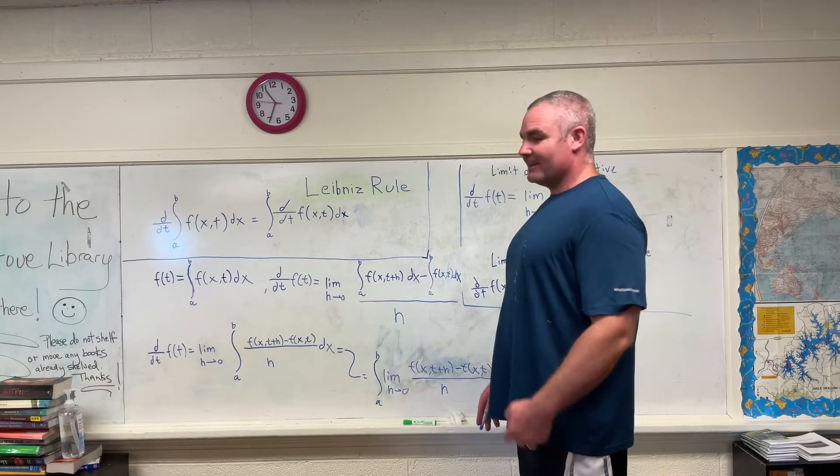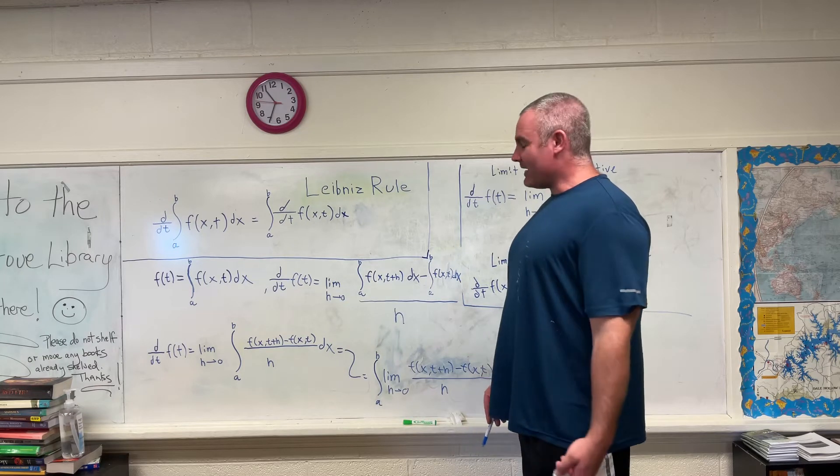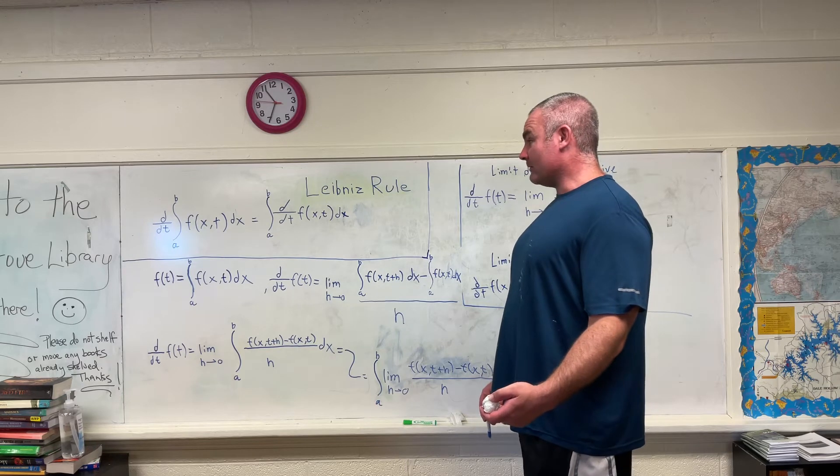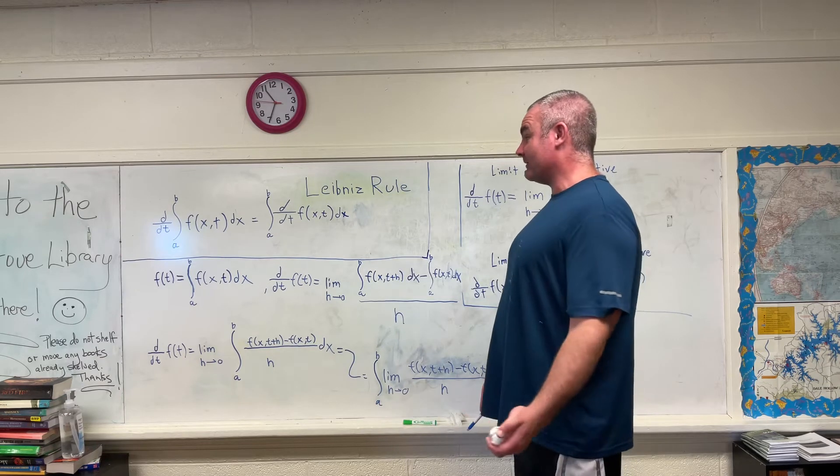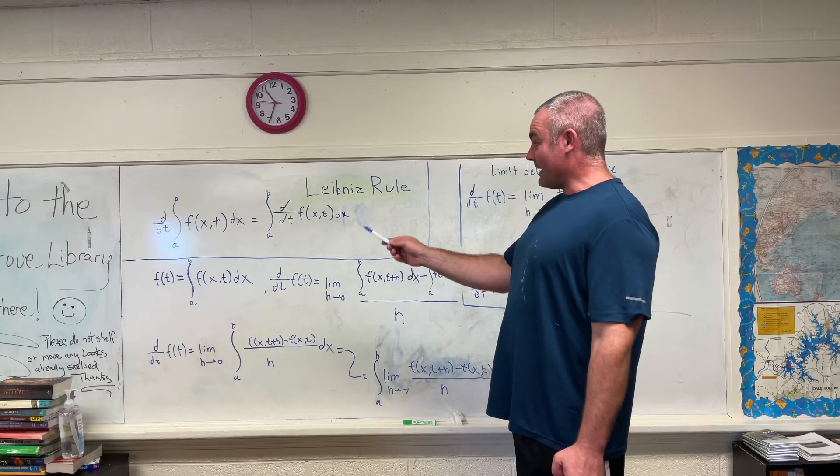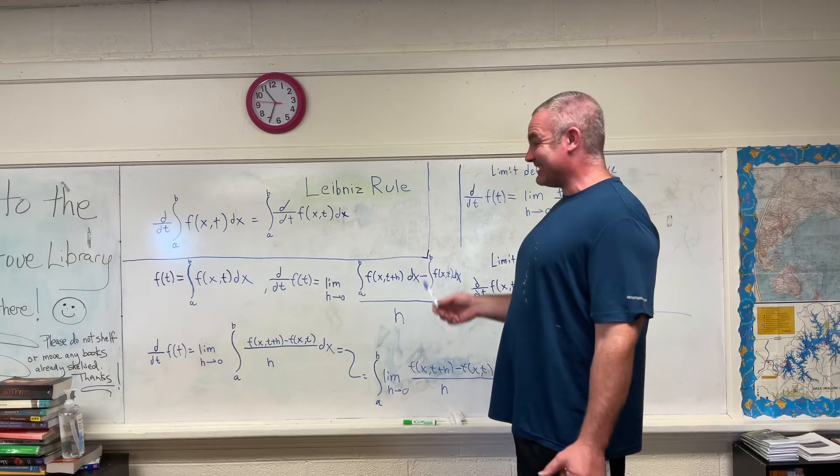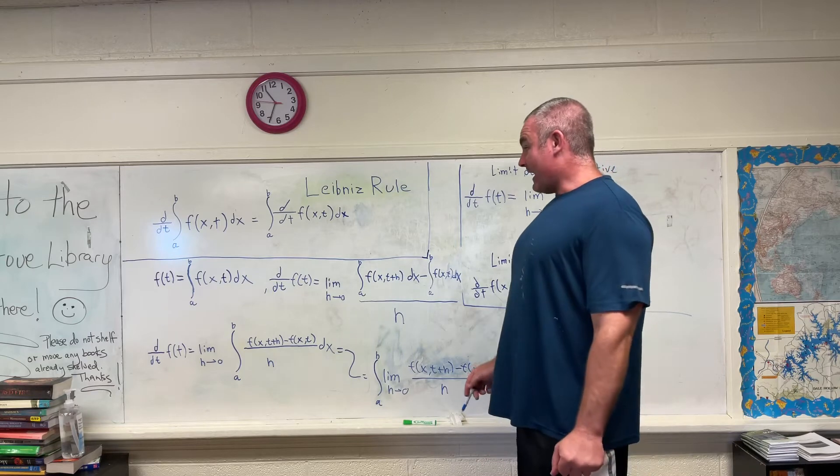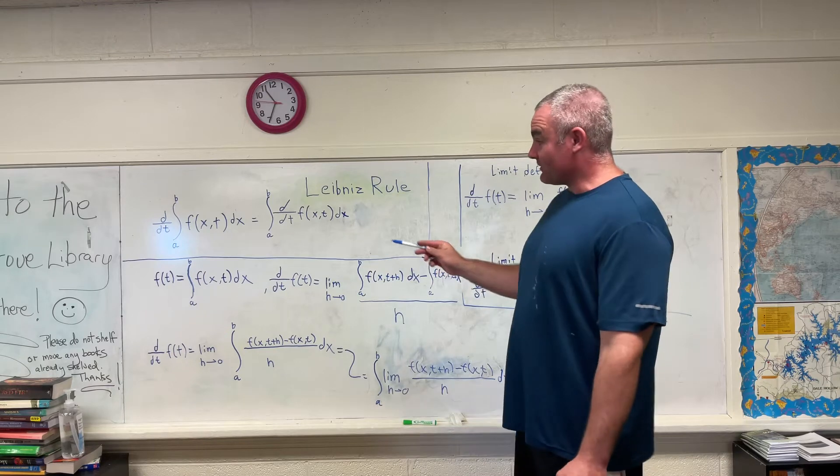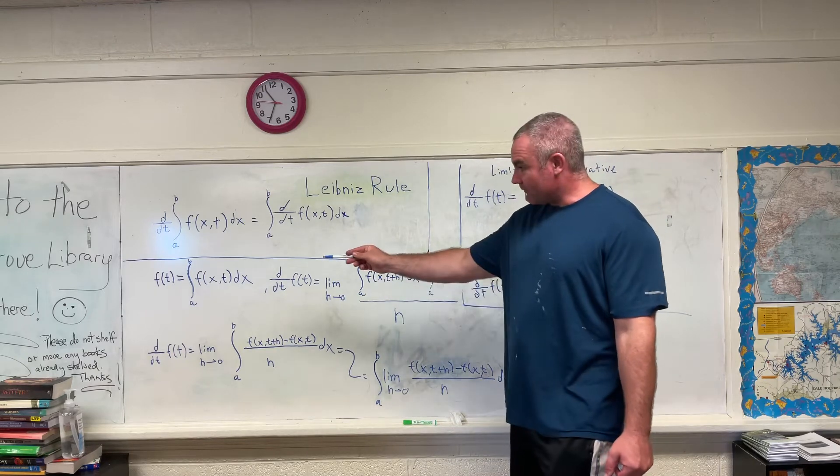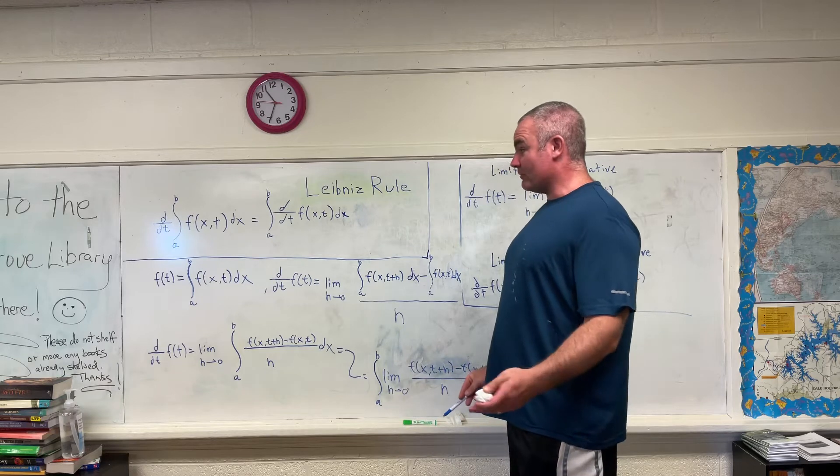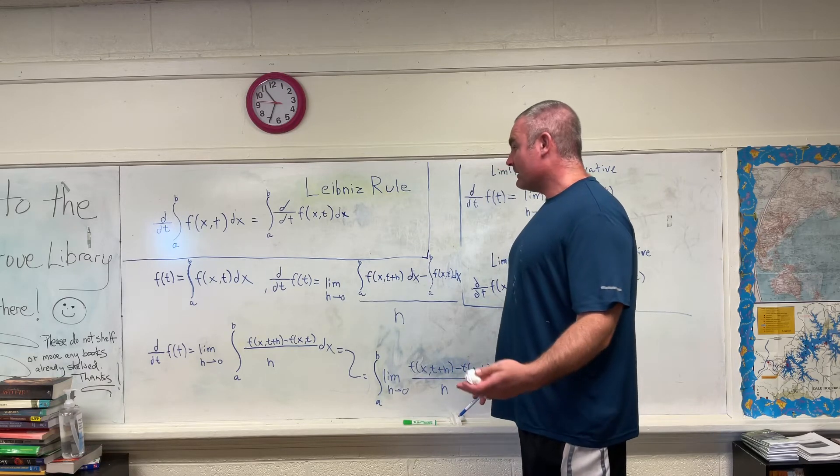As I said, it should be obvious, maybe not obvious, but you shouldn't have a problem knowing why that's going to be a function of t. Because if you take the derivative from a to b of a function that has x's and t's in it and then integrating with respect to x, you're going to get rid of all the x values because they're going to be filled in with your values a and b, and you're going to be left with nothing but t's, giving you a function of t.